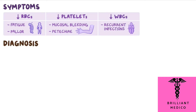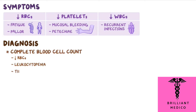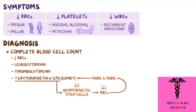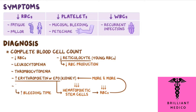Aplastic anemia may be suspected based on a complete blood cell count, which shows low red blood cell counts, leukocytopenia, and thrombocytopenia. Erythropoietin, or EPO, levels are also increased. EPO is a hormone released by the kidney that tells hematopoietic stem cells to grow and divide into new red blood cells. With aplastic anemia, there aren't enough hematopoietic stem cells to generate appropriate amounts of red blood cells, so more and more EPO gets produced in an attempt to compensate. There may also be decreased reticulocyte count, as reticulocytes are young red blood cells, demonstrating decreased red blood cell production. Bleeding time may also be increased due to low platelet counts.